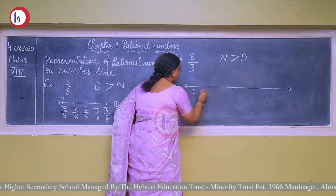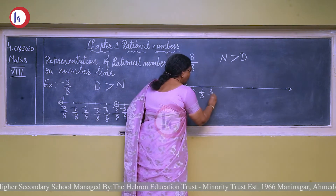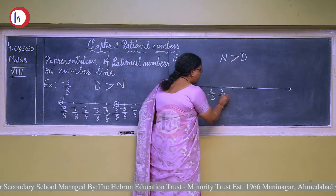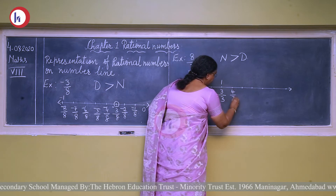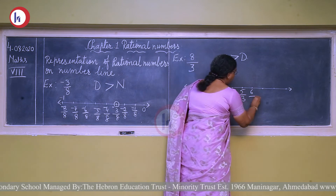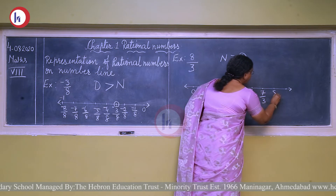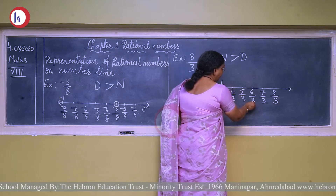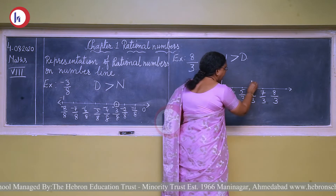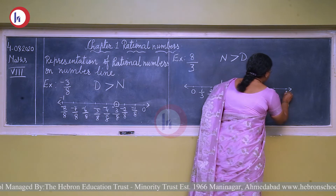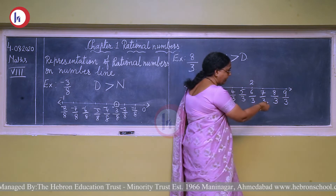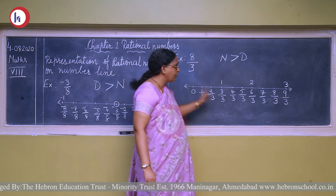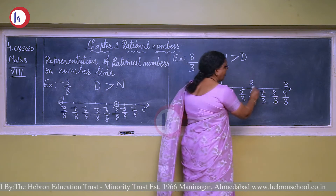So we start with 0 and write: 1 upon 3, 2 upon 3, 3 upon 3 — now 3 upon 3 can be cancelled and it becomes the whole number 1. Then 4 upon 3, 5 upon 3, 6 upon 3 — which equals the whole number 2 — then 7 upon 3, 8 upon 3, and 9 upon 3 which equals the whole number 3.